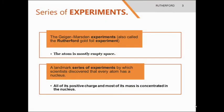First, series of experiments. The gold foil experiment gives the information that the atom is mostly having empty space. This series of experiments, by which scientists discovered that every atom has a nucleus — therefore, all of its positive charge and most of its mass is concentrated in the nucleus.